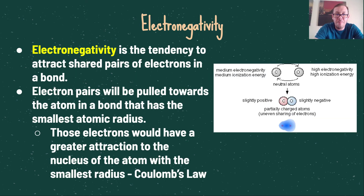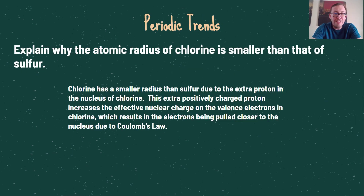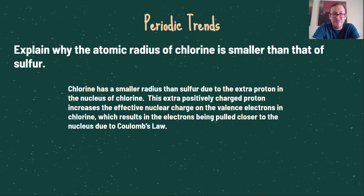Electronegativity is the tendency to attract shared pairs of electrons in a bond. Electron pairs are pulled towards the atom in a bond that has the smallest atomic radius, so you can justify electronegativity the same way you justify atomic radius. For example, the atomic radius of chlorine is smaller than that of sulfur because they are in the same period, and chlorine has an extra proton in its nucleus. This extra positively charged proton increases the effective nuclear charge on the valence electrons in chlorine, pulling them closer to the nucleus due to Coulomb's Law.